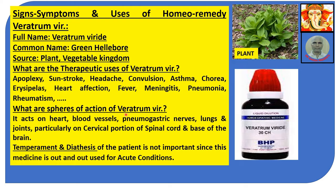What are the spheres of action of Veratrum Viride? It acts on the heart, blood vessels, pneumogastric nerves, lungs, joints, particularly on the cervical portion of the spinal cord and base of the brain. Temperament and diathesis of the patient is not important since this medicine is used entirely for acute conditions.